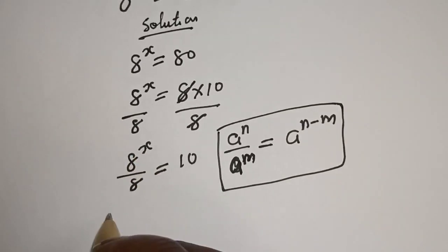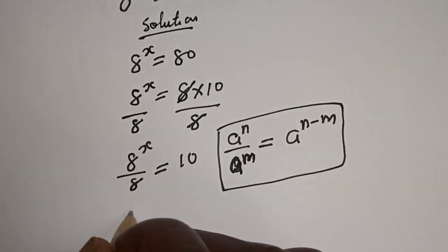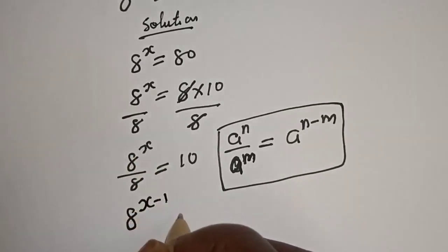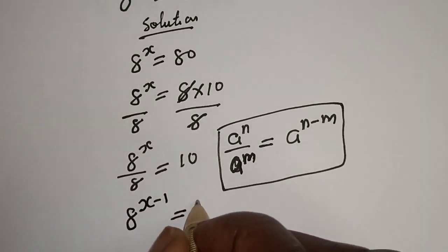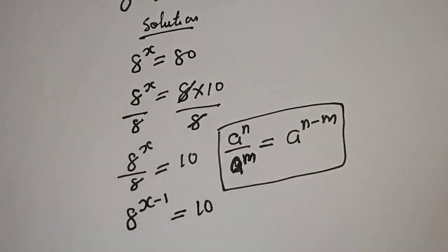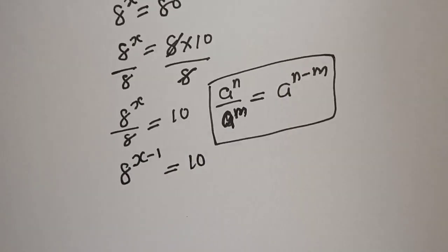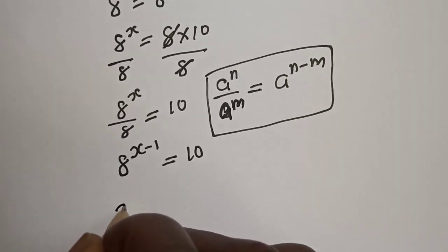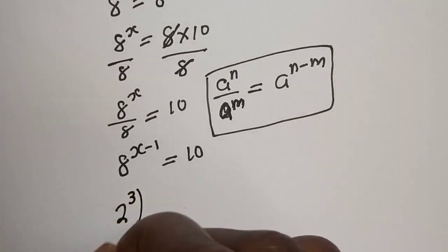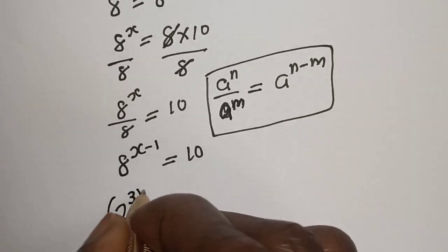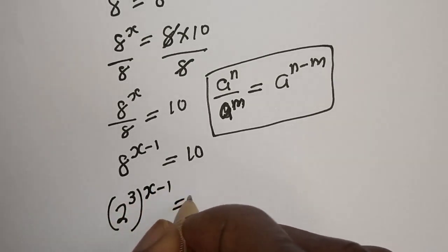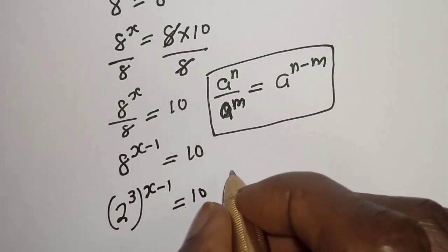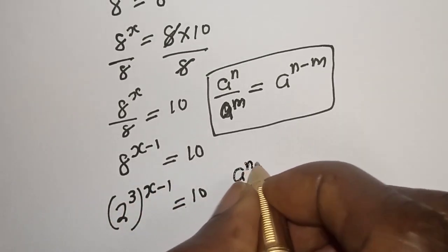Then this can be written as 8 raised to power s minus 1 is equal to 10. But 8 raised to power s minus 1 can be written as 2 raised to power 3, bracket s minus 1, is equal to 10. Take note that if you have a raised to power n to the power of m,